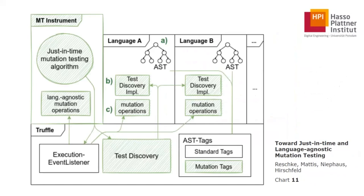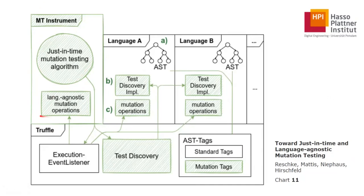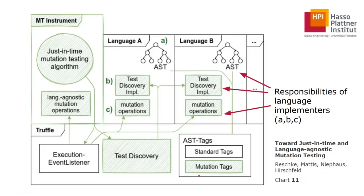Here is an overview of what we implemented — everything highlighted in green is what we actually implemented or added. The most notable thing is the mutation instrument called with --mt, which has a just-in-time mutation testing algorithm and language-agnostic mutation operations. We also added an interface for test discovery and some mutation tags to Truffle. Language implementers are required to add mutation tags to ASTs of their respective languages, provide test discovery implementations, and optionally provide mutation operations.